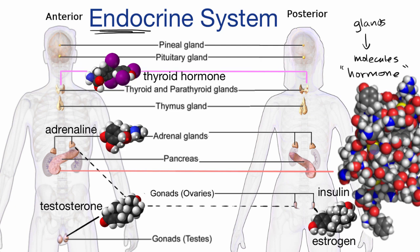Insulin binds to the surface of a cell so that it will start taking in sugar from the bloodstream. People with type two diabetes have an insensitivity to insulin, so they might have to take extra insulin in order for their cells to take in the proper amount of sugar.